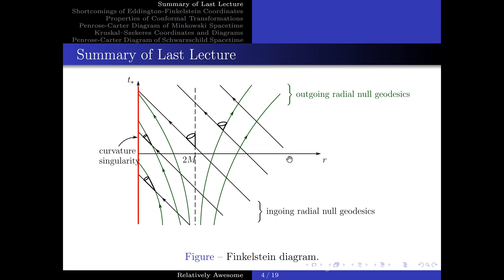The key takeaways are as follows. As we can see from the figure, as the radius decreases, the future light cones get increasingly tipped towards the singularity. Moreover, at r equals 2m, a null geodesic allows for light to orbit the black hole in circular motion. And finally, in regions r less than or equal to 2m, all time-like geodesics will head towards the singularity.